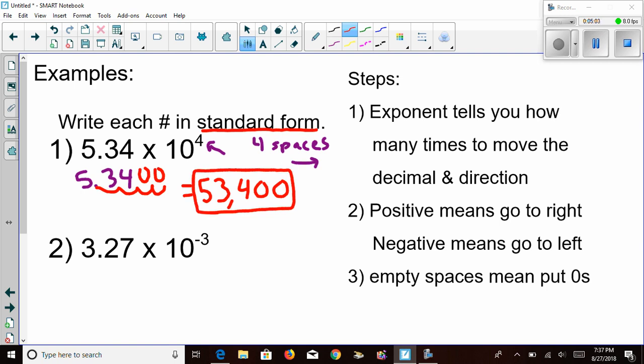So all we're doing is we're looking at the exponent, deciding if it's positive or negative, and then moving that many spaces in the appropriate direction. Let's look at the second example. My exponent is a negative three, which means I'm going to move three spaces in the negative direction. In this case, that means I am moving it to the left.